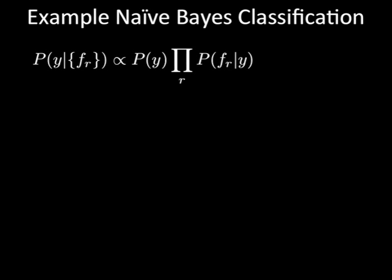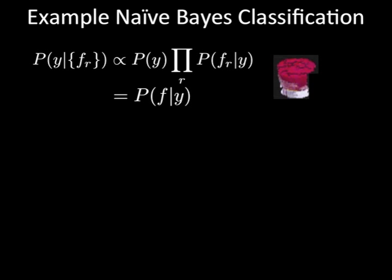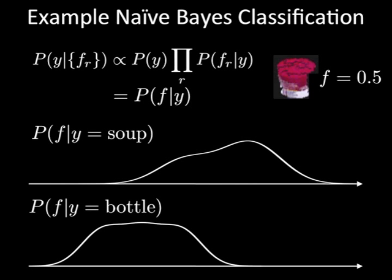Let's assume we want to do a Naive Bayes classification using the model we just learned. In this example, we have a single feature in two classes, so we assume that bottle and soup are equally likely. Our model reduces to just the probability P of F given Y. When we observe a new test image to classify it, we find the percentage of red pixels in this image, let's say it's 0.5, and use it to compute the conditional probability P of F given Y for both of these two classes. So in this case, the Naive Bayes model would predict about maybe 80 percent probability this object is a soup can and 20 percent probability it's a bottle.